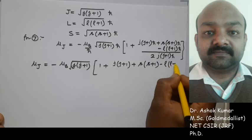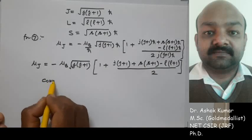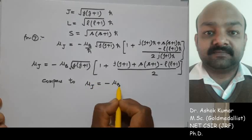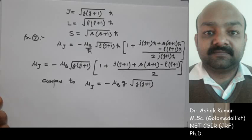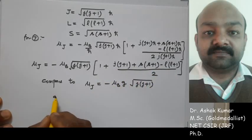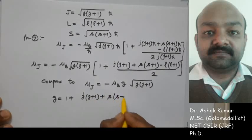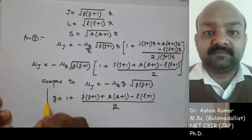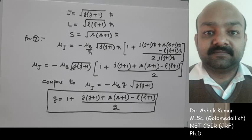Comparing this equation with the basic equation for the Landé g-factor, μ_J = −μ_B · g · √(j(j+1)), we can identify the g-factor. After comparing both expressions for μ_J, the Landé g-factor is: g = 1 + [j(j+1) + s(s+1) − l(l+1)] / [2j(j+1)]. This completes our derivation for the formula of the Landé g-factor.